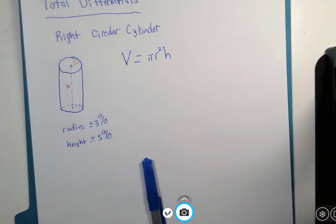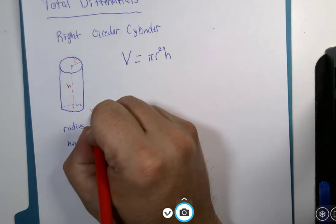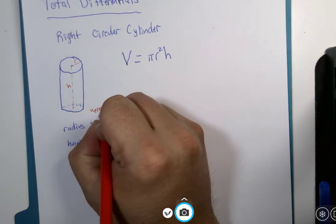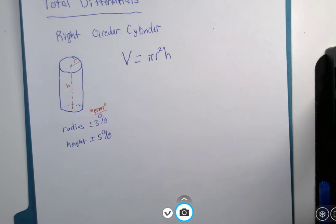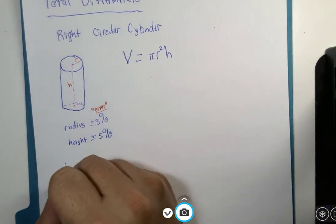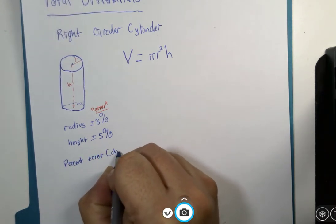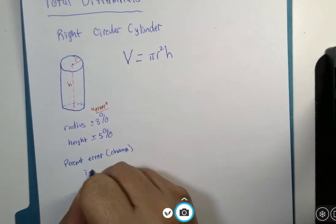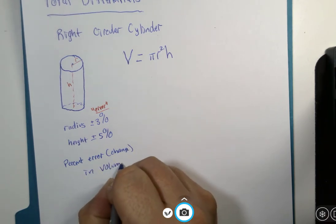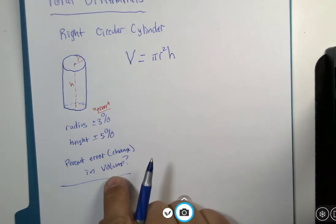So you could call it change if you want to, but I like to call it error because this sort of relates to the unknowns in the real world and when we measure that we have to take into consideration that we can't know exactly everything. So the question is, what is the percent error or change in volume? And this is all we've been given. There are no other numbers provided in this question.